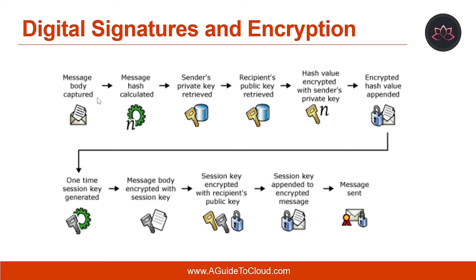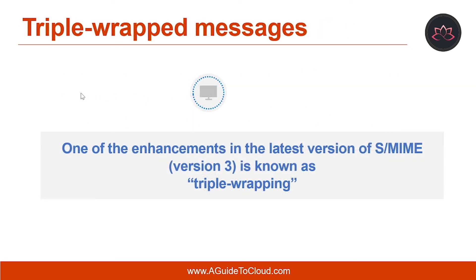Let's talk about how digital signatures and encryption work together. When digital signatures and message encryption are used together, users benefit from both services. Employing both services in a message does not change the handling or processing of either service. You can have a look at the following diagram which includes all the steps and the sequence involved in signing and encrypting an email message. One of the enhancements in S-MIME version 3 is known as triple wrapping. A triple-wrapped S-MIME message is one that is signed, encrypted, and then signed again. This extra layer provides additional security. When users sign and encrypt messages with Outlook on the web using S-MIME control, the message is automatically triple-wrapped. Outlook does not triple-wrap messages itself, but it can read them.